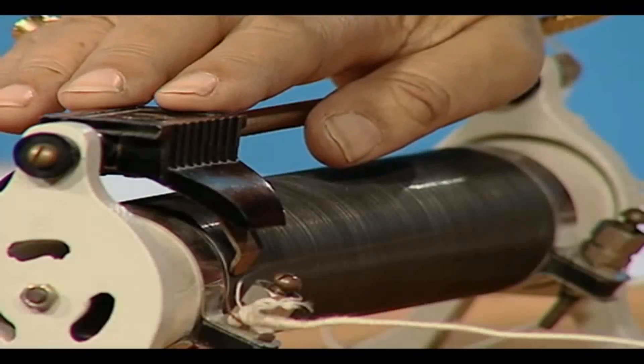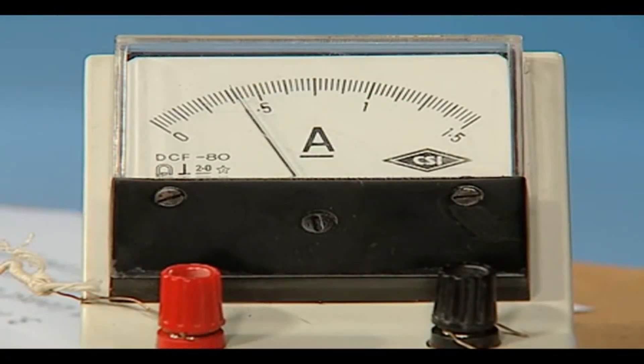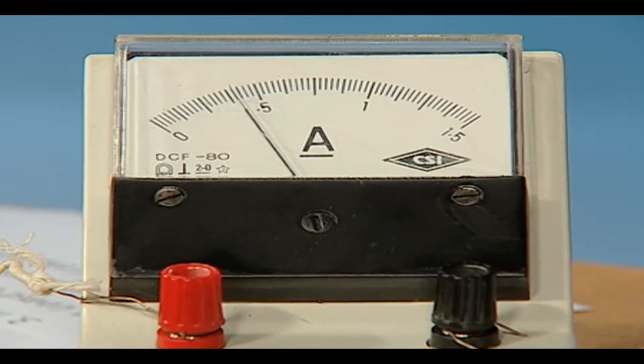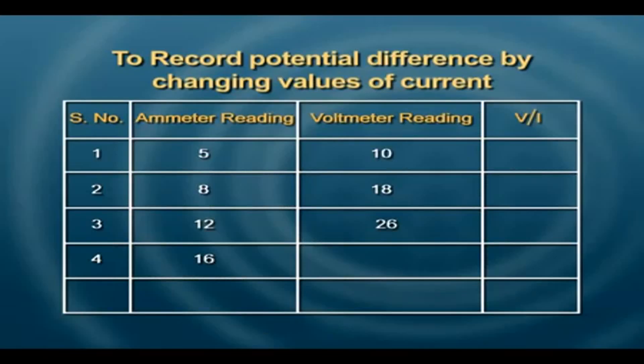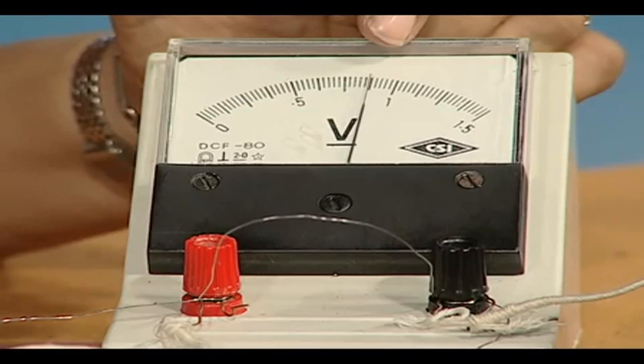We take more readings like this. The ammeter reading is now 16 divisions and our corresponding voltmeter reading is 35 divisions.